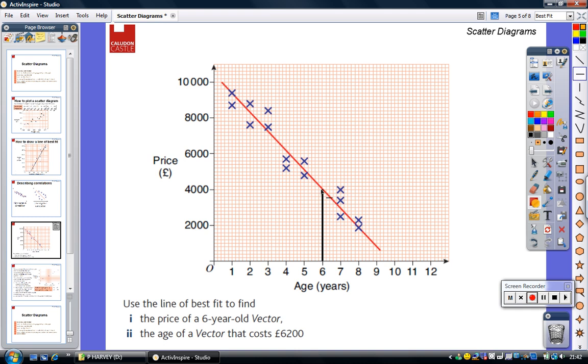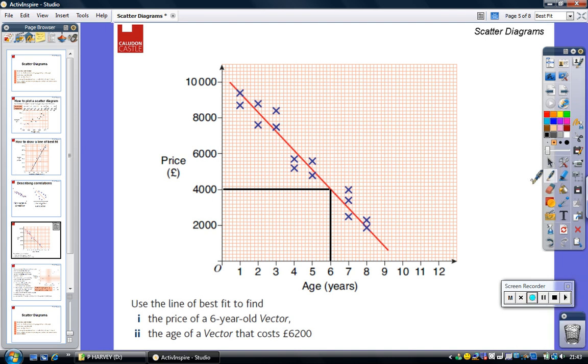I now want to read across and see what the price is. So I would estimate, using my line of best fit, that the price of a six-year-old vector is £4,000.